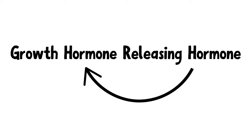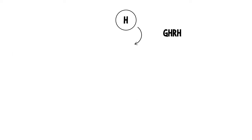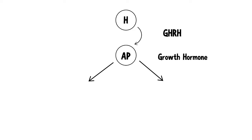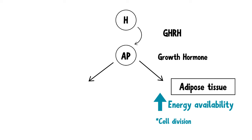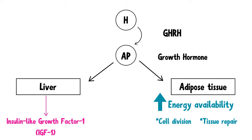Number 4 is GHRH, which stands for growth hormone-releasing hormone — a hormone that releases growth hormone. Growth hormone promotes growth of tissues, particularly in muscles and bones, by stimulating the production of insulin-like growth factor 1, IGF-1. GHRH is produced in the hypothalamus and stimulates the anterior pituitary gland to produce growth hormone. Growth hormone acts on adipose tissue causing lipolysis — the breakdown of fat releases energy and increases its availability for growth processes like cell division and tissue repair, which are essential during childhood and adolescence. Growth hormone also acts on the liver to stimulate production of IGF-1, which promotes the growth of bone and muscle.